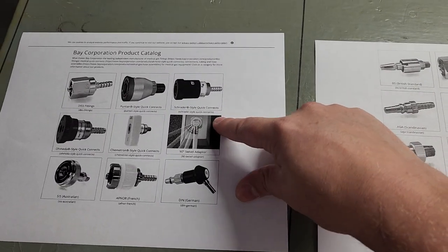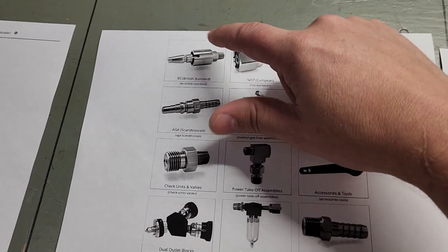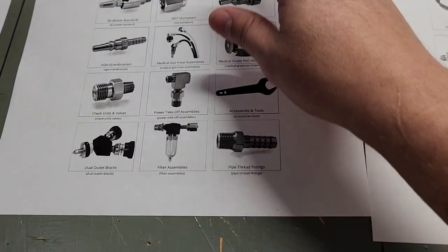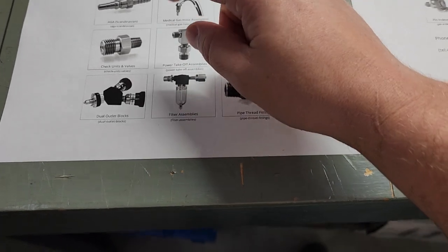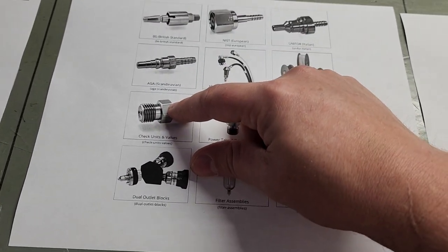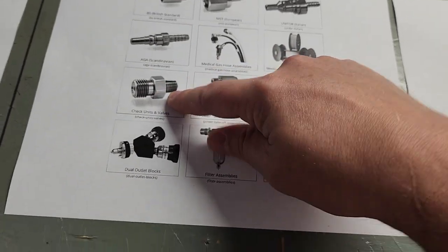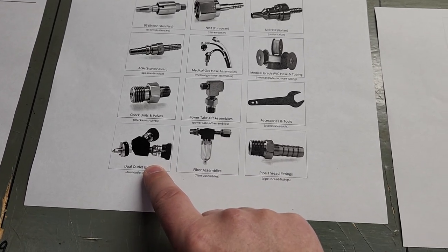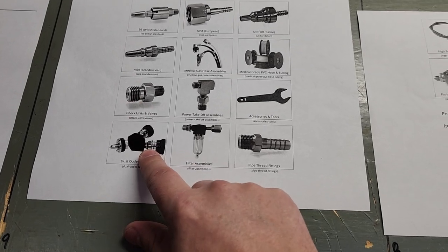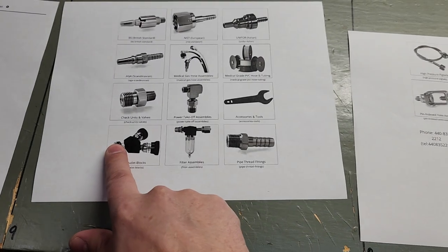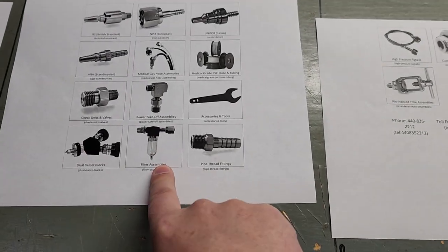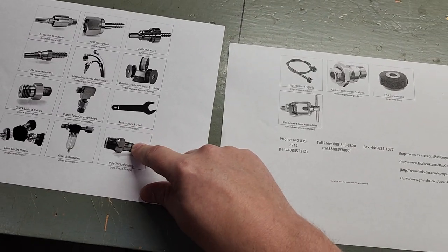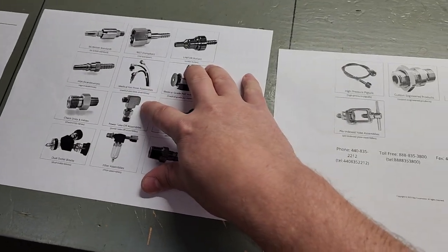DIN, 90-degree swivels—that's an option. With nitrogen you start seeing stuff like BS, the British standard. There are different types of connections: quick connects, check valve units to prevent a loud blast of air when you disconnect. We can put check valves in your hoses, dual outlet blocks for connecting multiple hoses to one port, various filters for particulate and moisture separation, hose barbs, and 90-degree fittings.